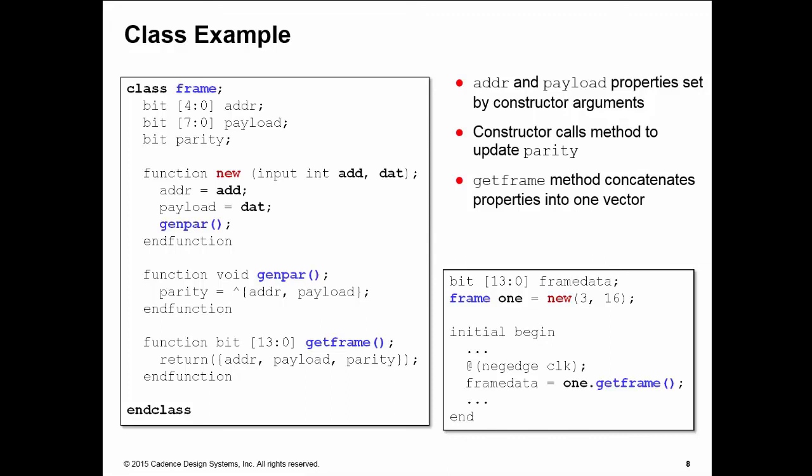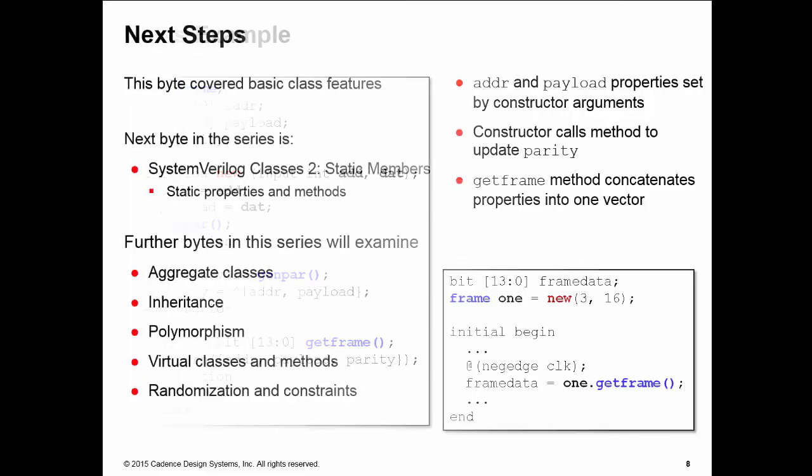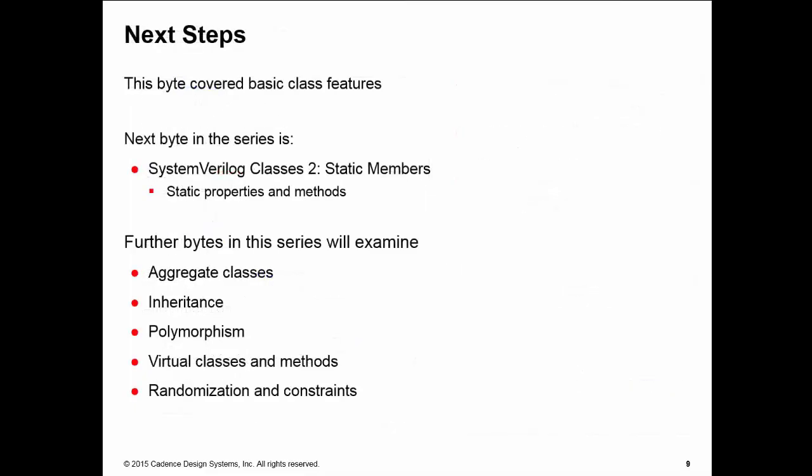We've also got another method here, get frame, and this is what we call a packing method. What it does is returns all the properties of the class concatenated together into one large vector, a 14-bit vector.